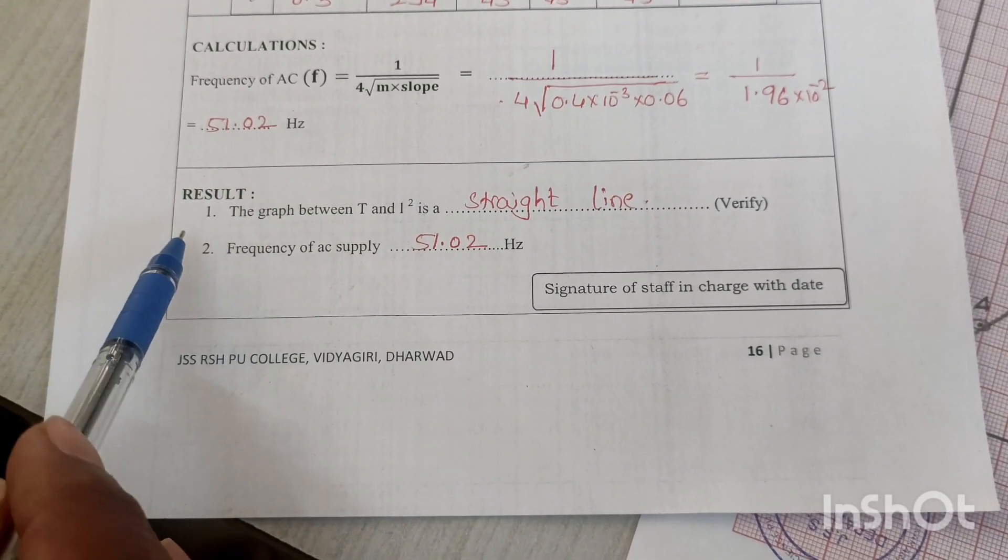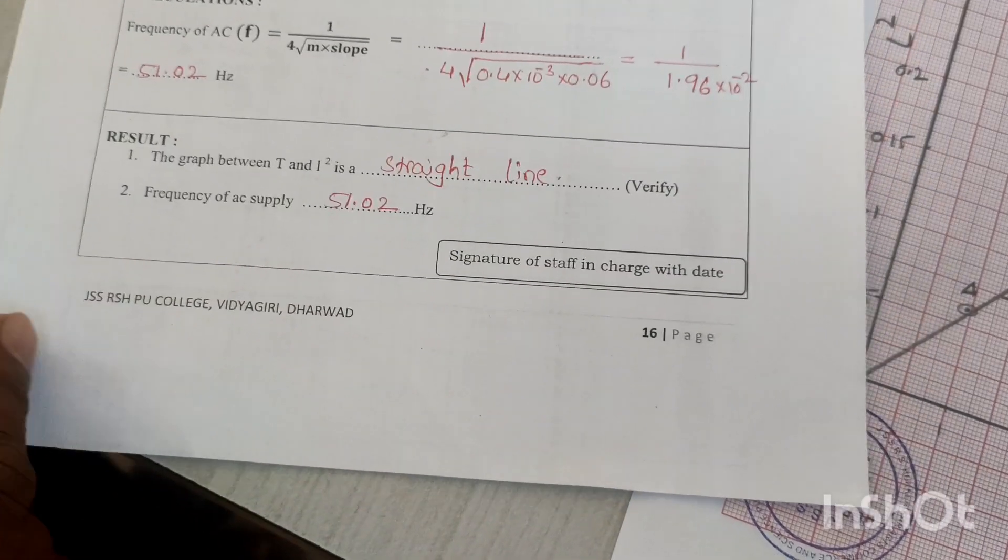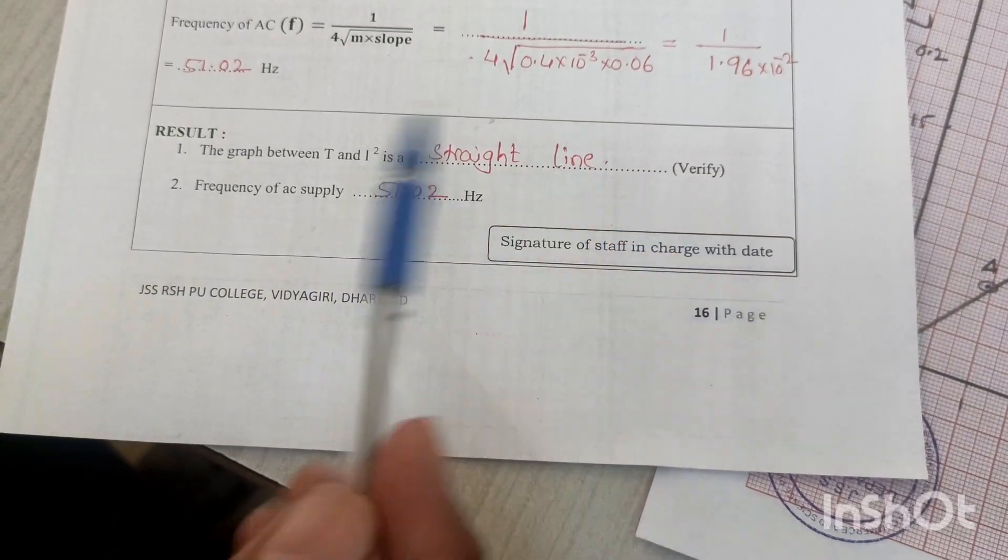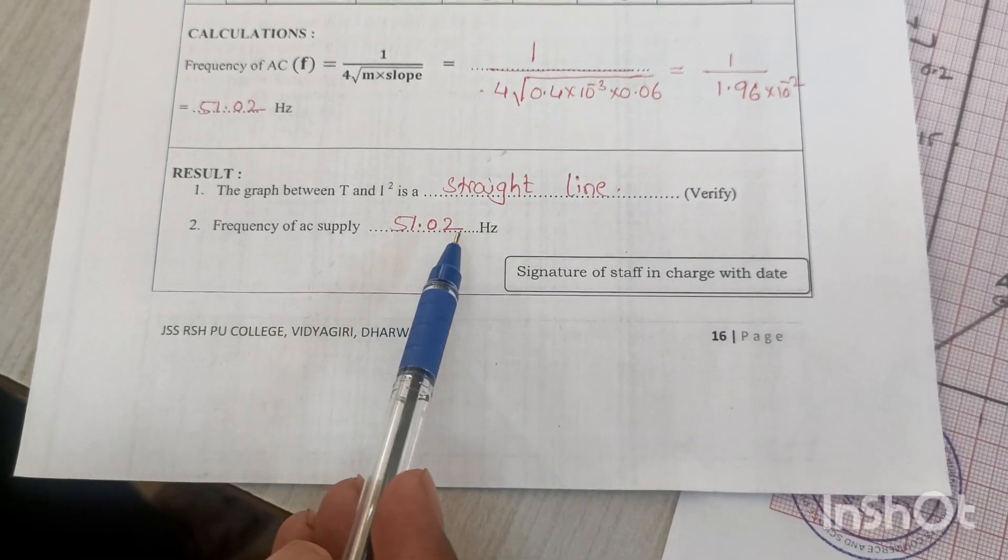The final result shows that the graph between tension and L² is a straight line passing through the origin. The frequency of AC supply is found to be 51.02 hertz.